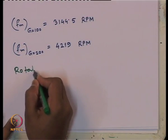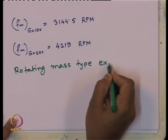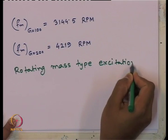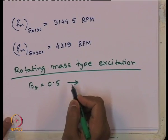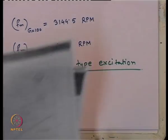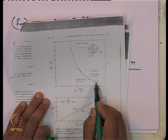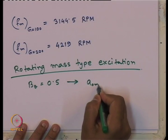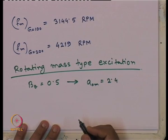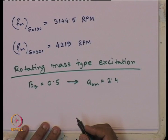Coming to rotating mass type excitation, for b-theta equals to 0.5, from the design chart - once again let me show it here - this is the value of 1, so 0.5 is somewhere here. That is why I got two different values for rotating mass type and constant force type. I am reading a-naught-m as 2.4. You can extend the graph and get the values, because here no limit has been mentioned.